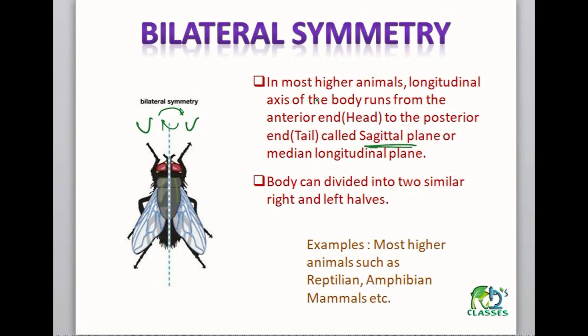Most animals that have a sagittal plane — also called the median longitudinal plane — if divided along it, give two halves: right and left, which are mirror images of each other. So this is called bilateral symmetry. Ok, thank you.